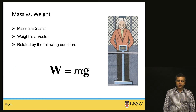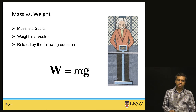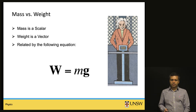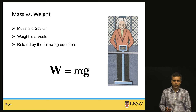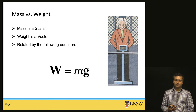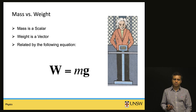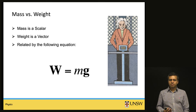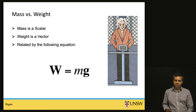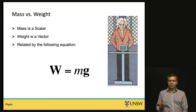We also need to distinguish between mass and weight. Too often we use these terms interchangeably, but there is a difference. Mass is a scalar quantity, whereas weight is a vector quantity. Weight is actually a force — it is equal to the force of gravity, which is mg. So you need to multiply mass by the acceleration due to gravity to obtain weight, and this is a vector quantity, as opposed to mass, which is a scalar.